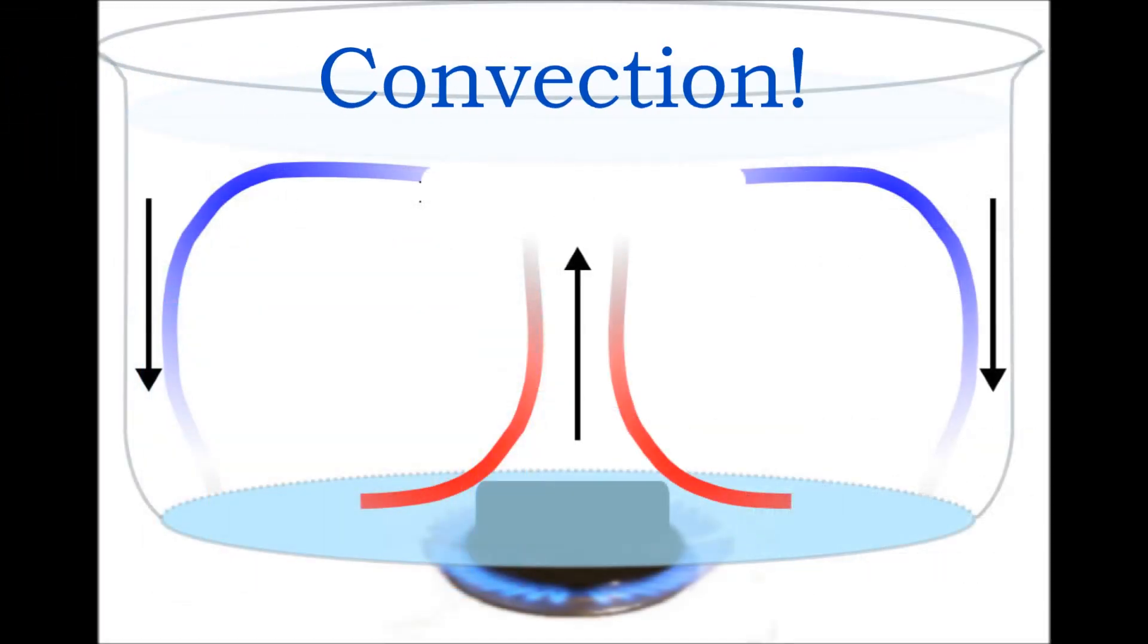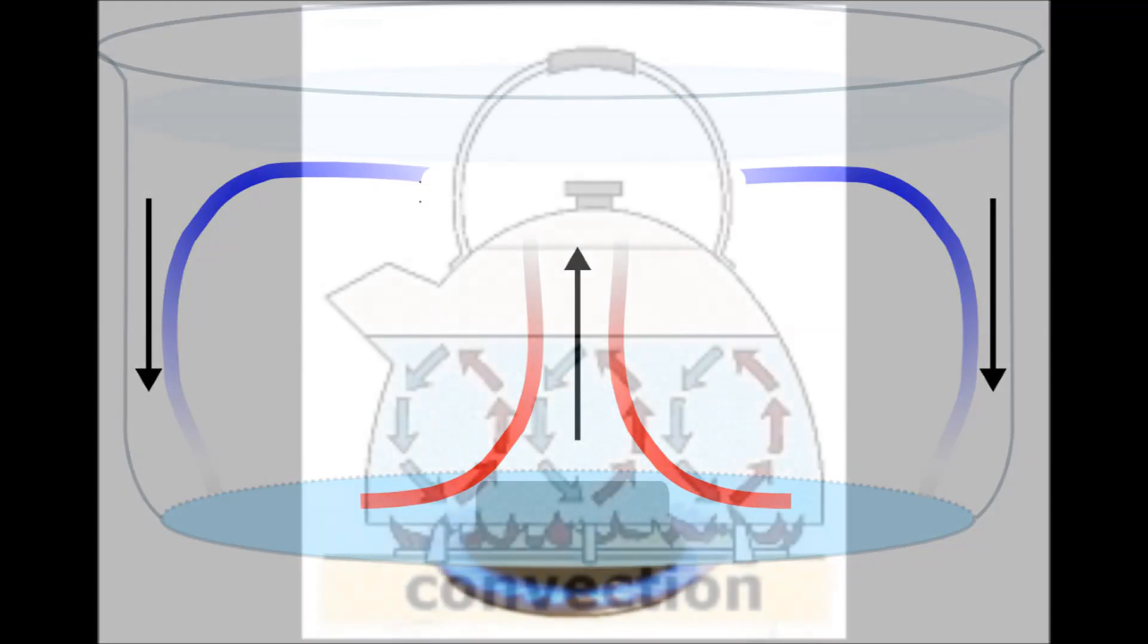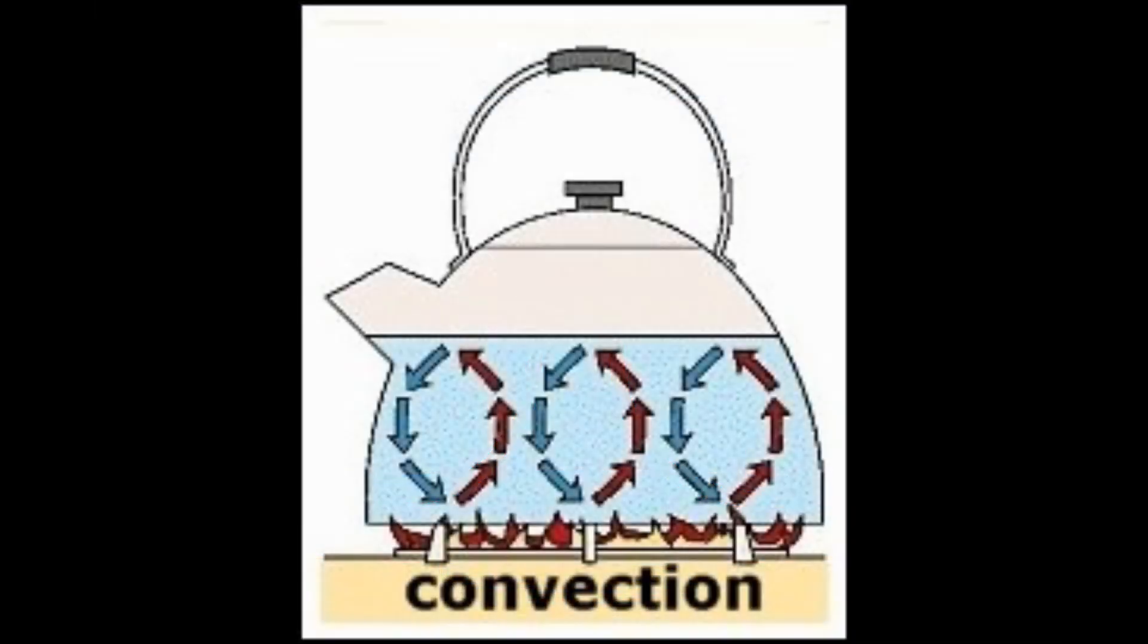Thermal energy is transferred from hot places to cold places by convection. Convection occurs when warmer areas of a liquid or gas rise to cooler areas. The cooler liquid or gas then takes the place of the warmer areas which have risen higher. This results in a continuous circulation pattern.